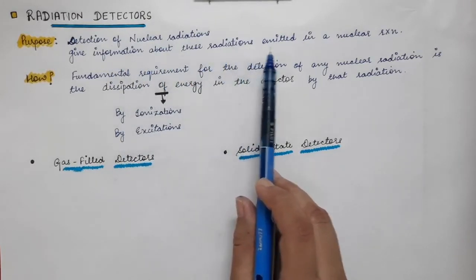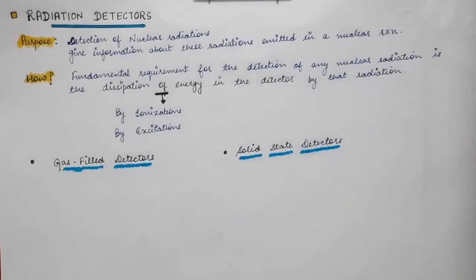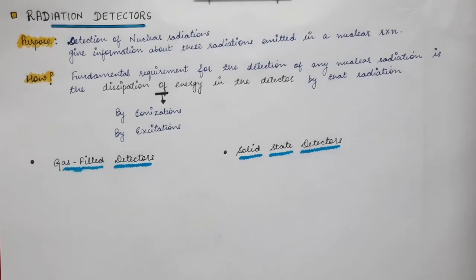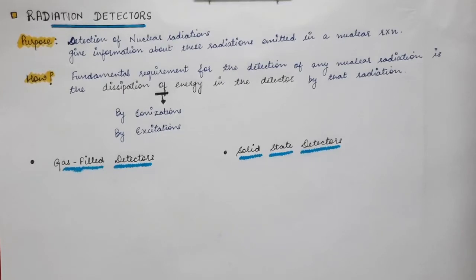The radiation detectors give us information about nuclear radiations emitted in a nuclear reaction. They help us find properties such as momentum, spin, charge carried by the radiation, and also the energy carried by the nuclear radiation. They also help us identify which kind of particle is emitted — whether it is an alpha particle, a beta particle, or gamma radiation — in a nuclear reaction.